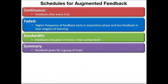Faded feedback is when the earlier stages of the motor learning task — the acquisition phase — have a high frequency of feedback. Then as the person learns more, you taper off the feedback, getting less and less as the person becomes more and more proficient at the motor skill. This is called a faded feedback schedule.